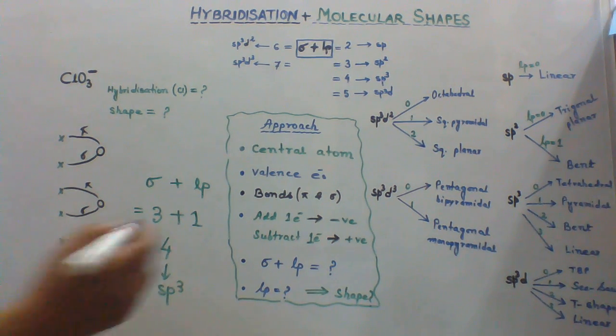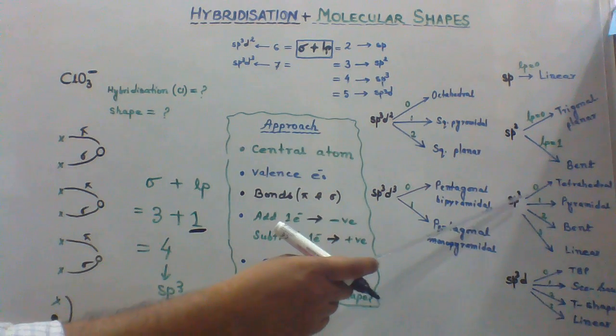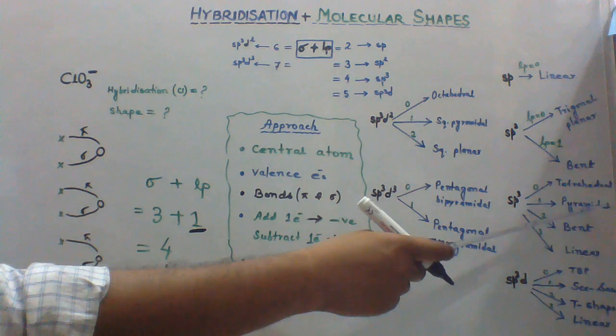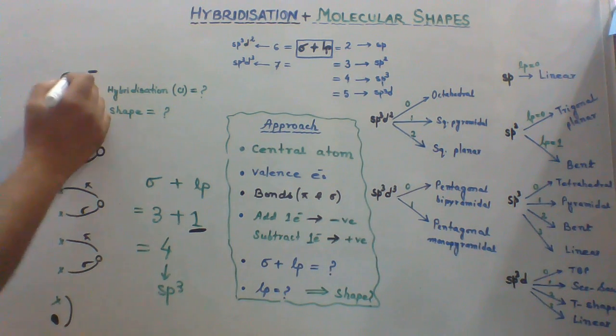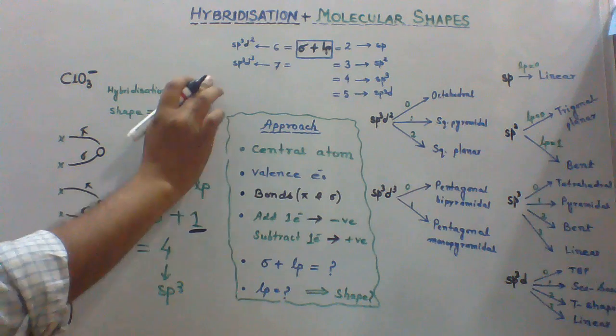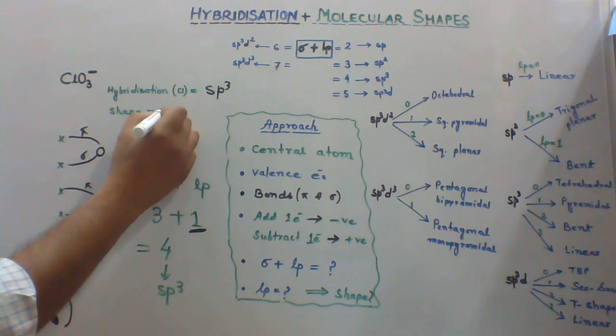We have 1 lone pair. So sp3 with 1 lone pair will be pyramidal in shape. So the hybridization of Cl in this species is sp3 and shape is pyramidal.